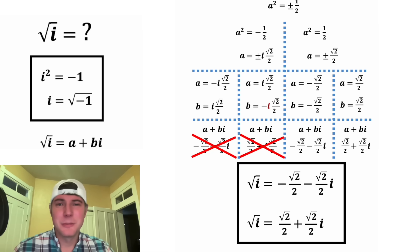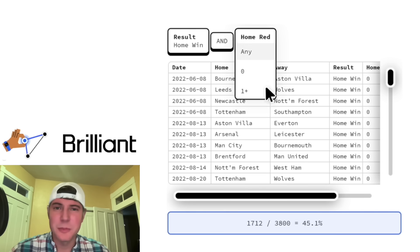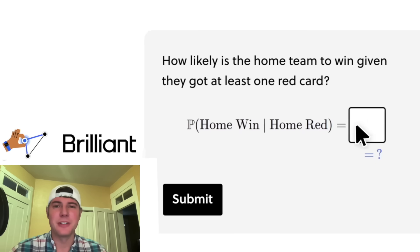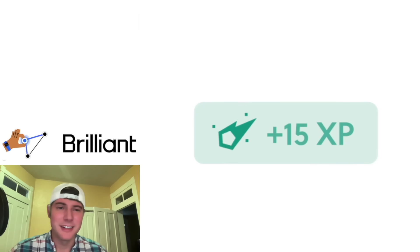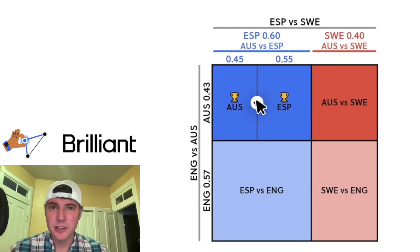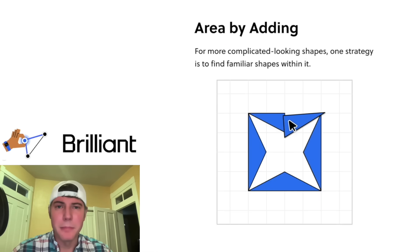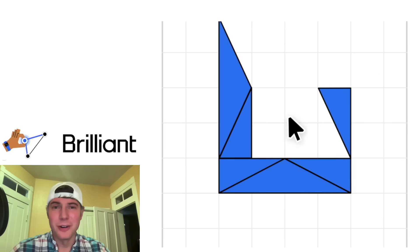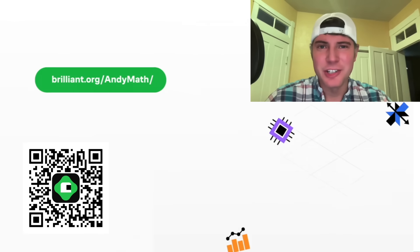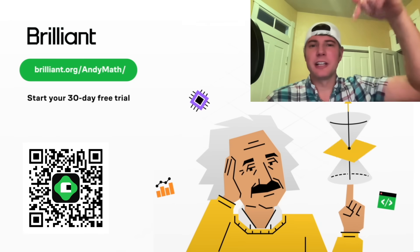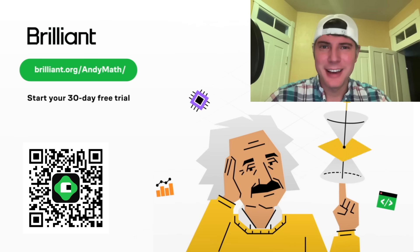I thought this challenge was brilliant — speaking of Brilliant, let's talk about them. Brilliant has thousands of lessons in math, data analysis, programming, and AI, and all of them are interactive, which is the best way to learn. If you'd like more practice with imaginary and complex numbers, Brilliant has it, along with all the foundational math lessons you need. Building a daily habit of interactive learning is one of the best ways to learn math. Visit brilliant.org slash animath for a free 30-day trial and 20% off an annual premium plan.